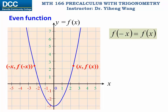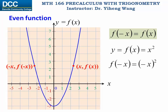That is a very important conclusion, and we're going to use this to determine if a function is an even function or not algebraically. For example, for the function y equals f(x), if we want to evaluate f(-x), we substitute in negative x, and we get x squared back, and this equals f(x). From this we can tell that this function is an even function.